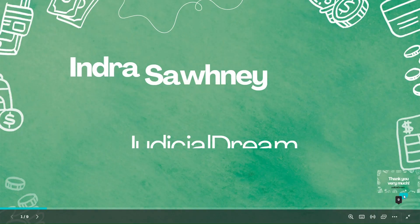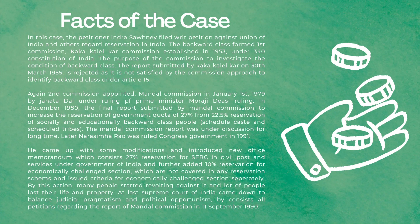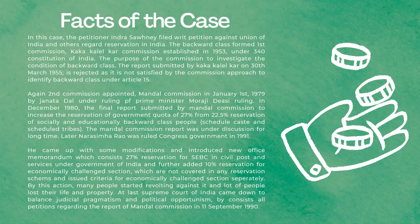Let's look into the facts of Indra Sahanev vs Union of India. We will understand about reservation and when India was independent. At that point of time, the first Backward Class Commission was formed in the year 1953 — the Kaka Kalelkar Commission. Its work was to collect a report on which people in India are socially and economically backward. Ultimately, they submitted their report in the year 1955, but it was rejected in the year 1961.